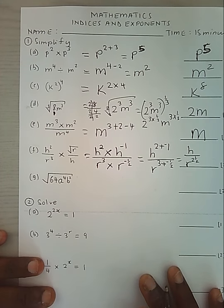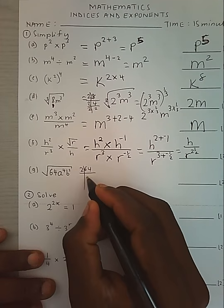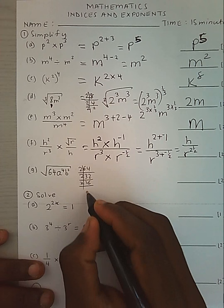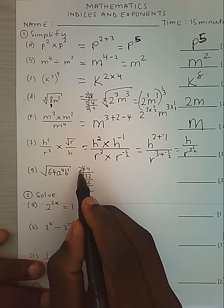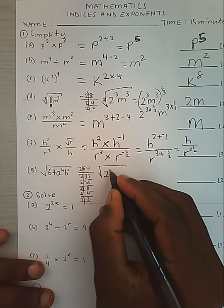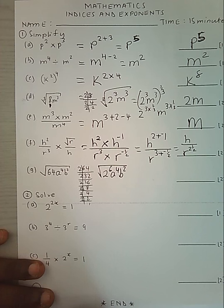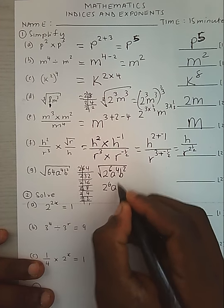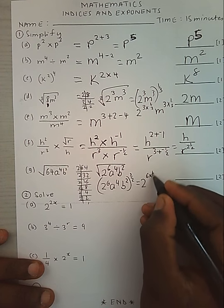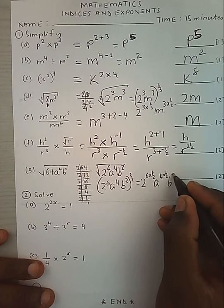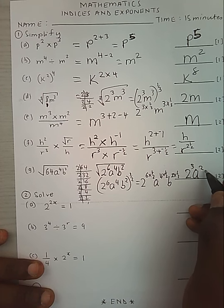When we look at the next question, we have 64. We can factorize 64: 64 divided by 2 is 32, by 2 is 16, by 2 is 8, by 2 is 4, by 2 is 2, by 2 is 1. This gives us 2 power 6. So our question becomes 2 power 6 times A power 4 times B power 2. We replace the square root with power a half, then open the brackets: 2 power 6 times a half, A power 4 times a half, B power 2 times a half, giving us 2 power 3, A power 2, B.